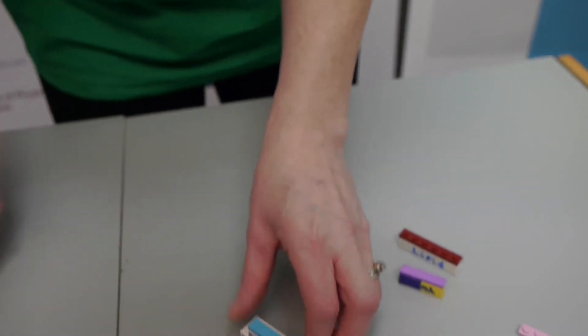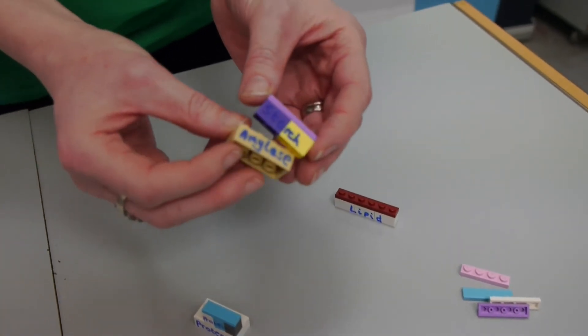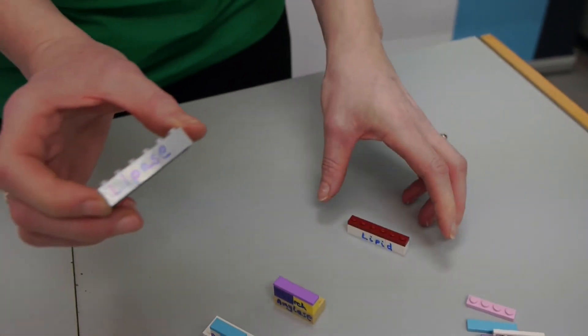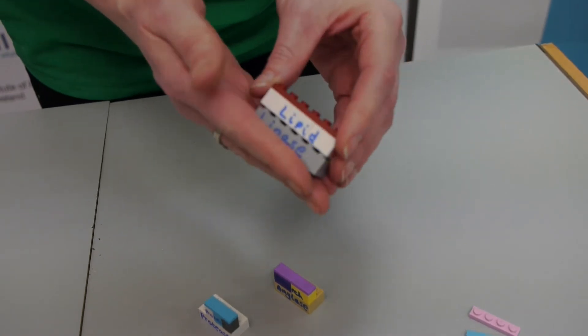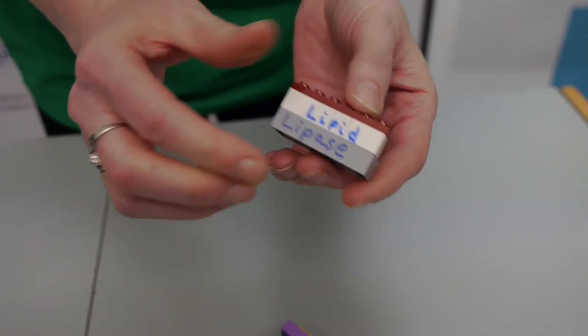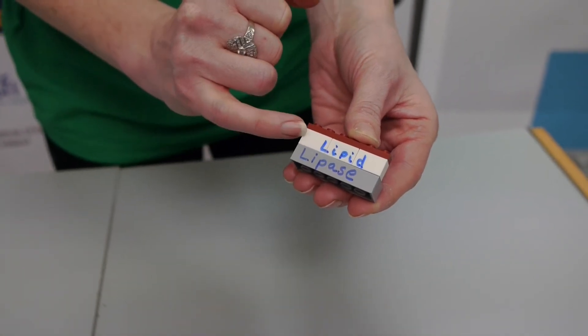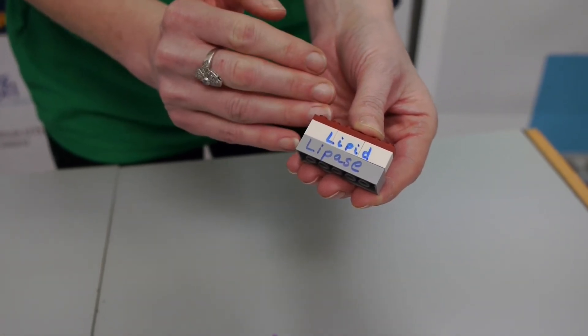I ask the students to repeat this for the other bricks. So we've got amylase which will break down starch. So we just connect these together so the students can again see that they now have a different enzyme substrate complex.